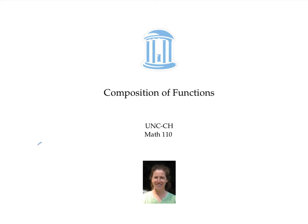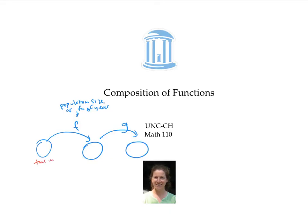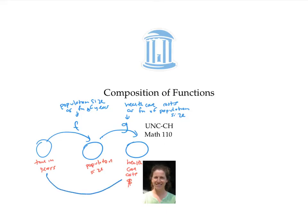When you compose two functions, you apply the first function, and then you apply the second function to the output of the first function. For example, the first function might compute population size from time in years — its input would be time in years since a certain date, its output would be number of people in the population. The second function g might compute healthcare costs as a function of population size, taking population size as input and outputting healthcare costs. If you compose these functions, you go all the way from time in years to healthcare costs. This is your composition, g composed with f.